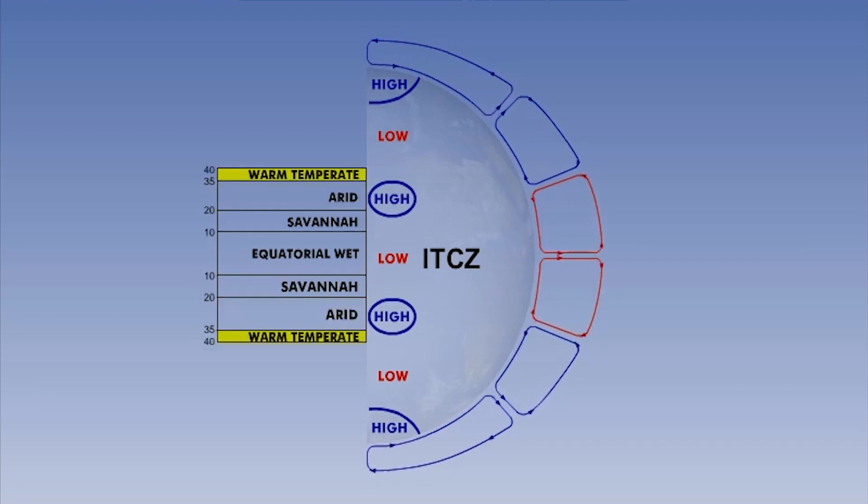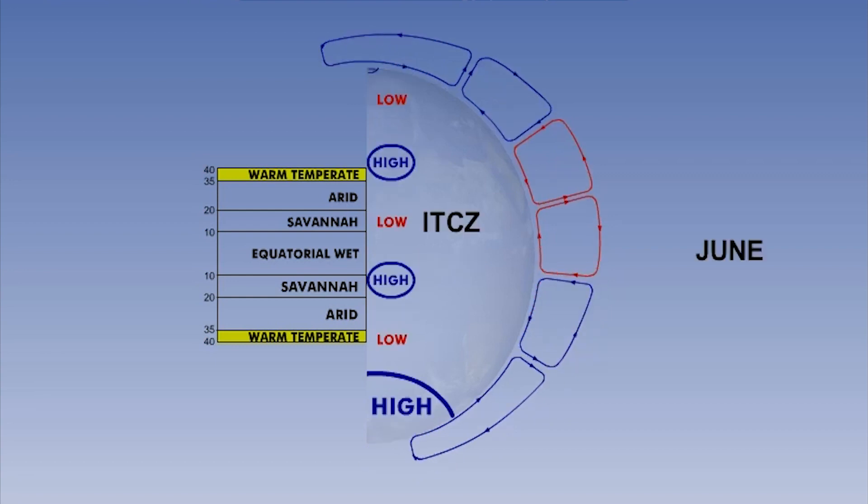The next zone is called the warm-temperate zone, and is a thin band extending from approximately 35 degrees to 40 degrees latitude. Let's just examine the northern hemisphere one for now. Notice that in the summer months in June and July, the subtropical high gives the zone hot, dry, cloudless skies.